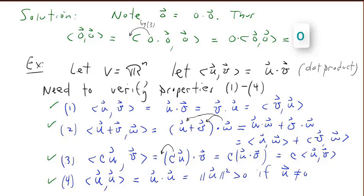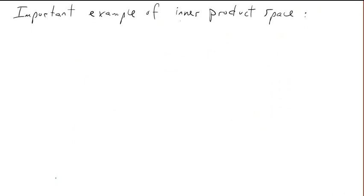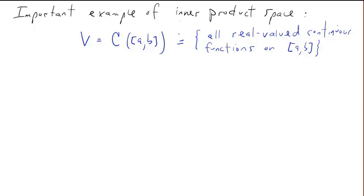Here's an important example of an inner product space — possibly the most important example. Let V be the real-valued continuous functions on an interval [a, b] on the real line. We've already discussed that this is a vector space. Now, why is this an inner product space? We have to first define what the inner product means.